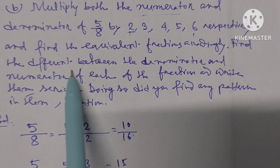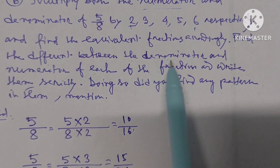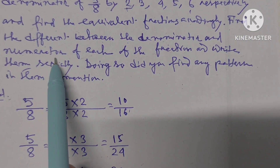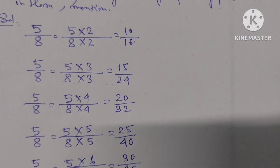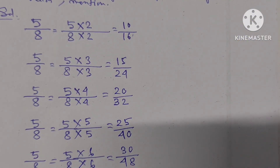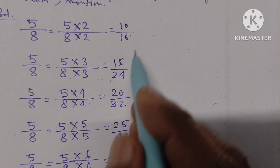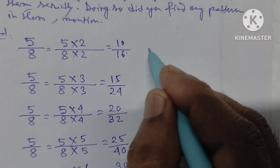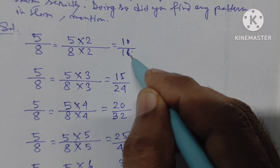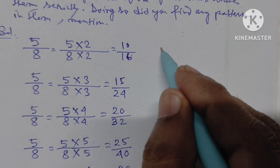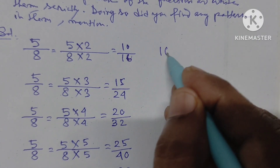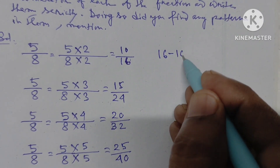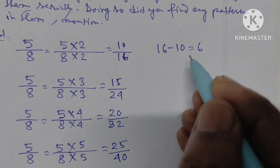Now find the difference between the denominator and numerator of each fraction. The denominator of the first equivalent fraction is 16. 16 minus 10 equals 6.